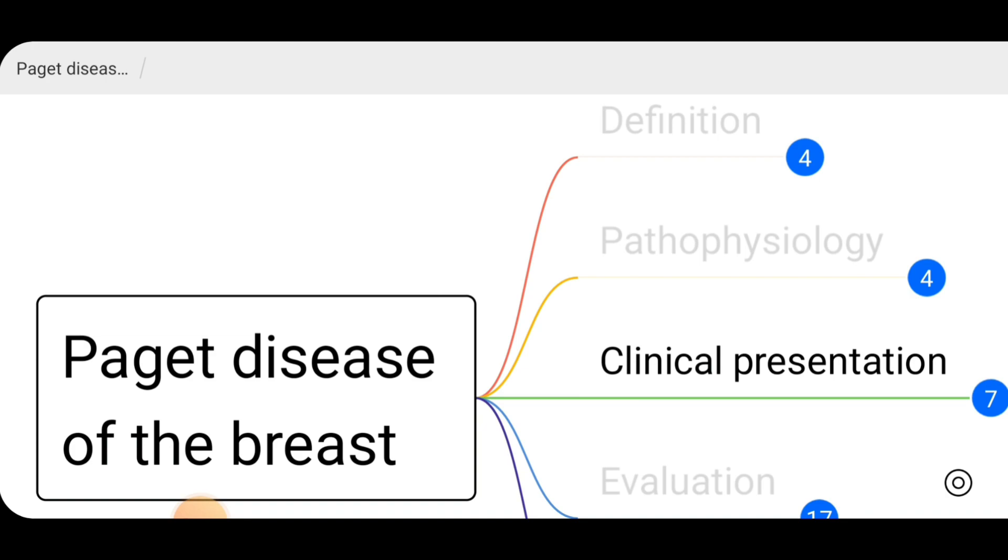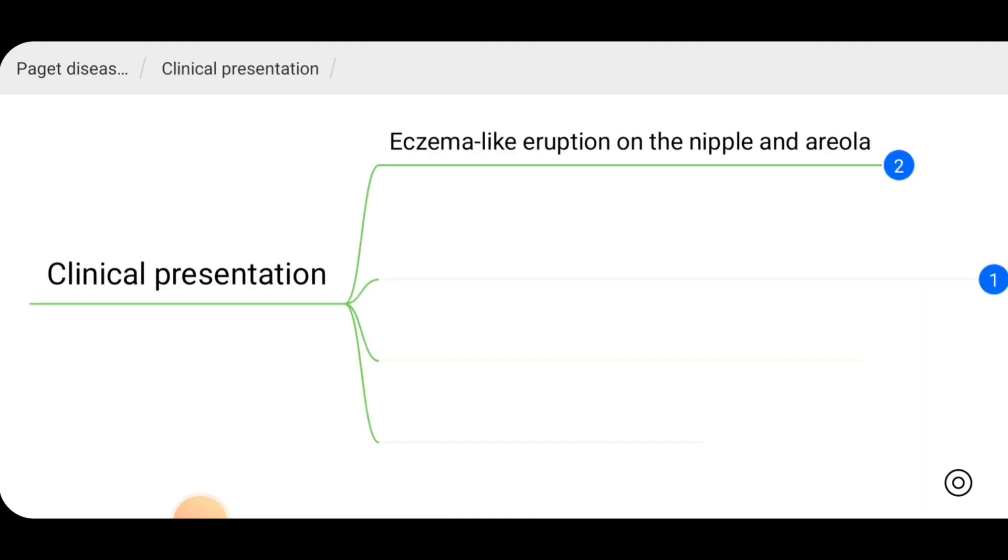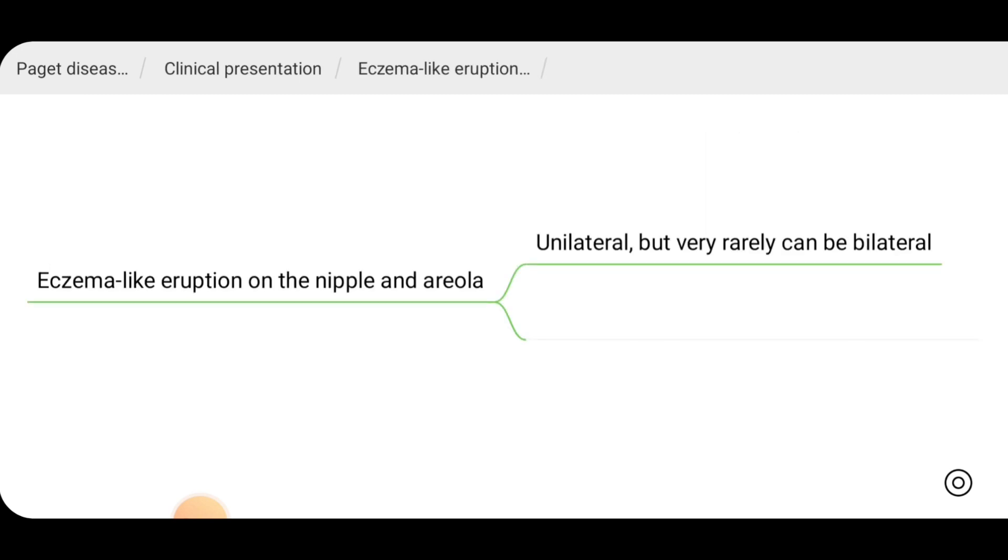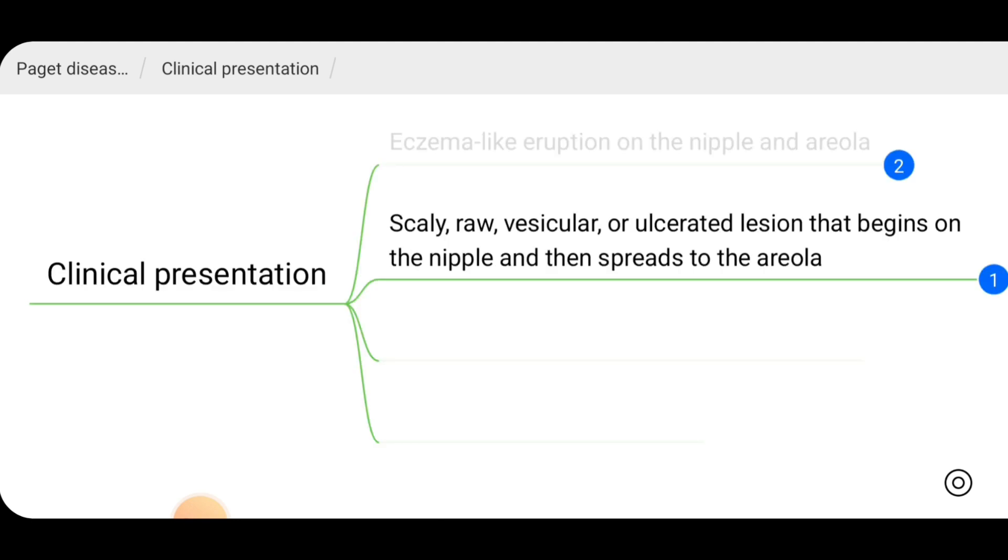The clinical presentation of Paget disease. There is eczema-like eruption on the nipple and areola. It is unilateral but very rarely can be bilateral as well. Rarely, nipple retraction can be there in advanced disease. And also, there may be scaly, raw, vesicular or ulcerated lesion that begins on the nipple and then spreads to the areola.